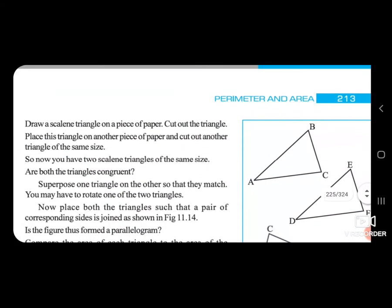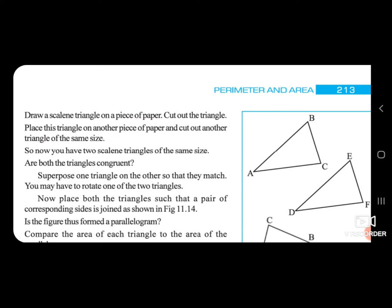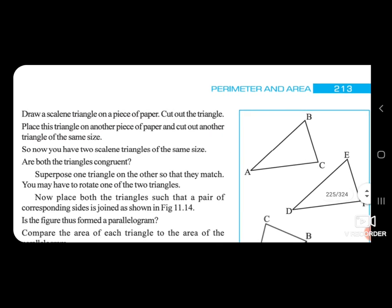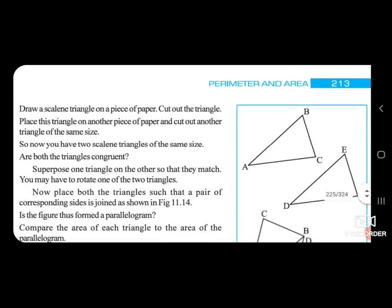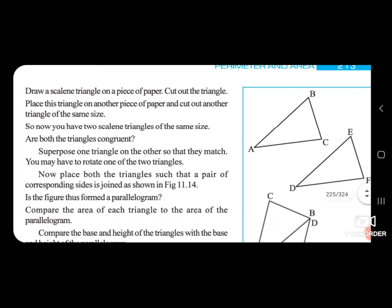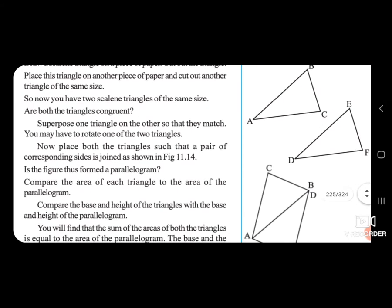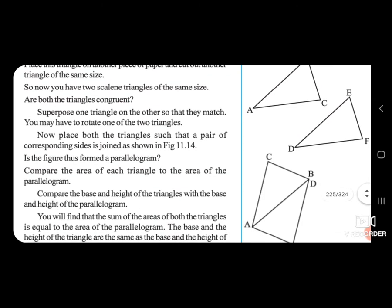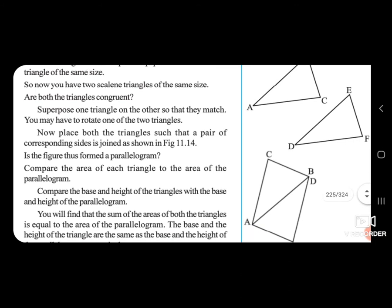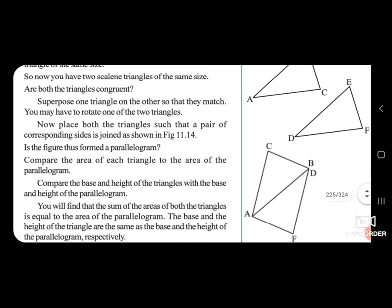Draw a triangle on a piece of paper and cut it out. Place this triangle on another piece of paper and cut out another triangle of the same size. So now you have two triangles of the same size — both the triangles are congruent. Superpose one triangle on the other so that they match. You may have to rotate one of the two triangles.